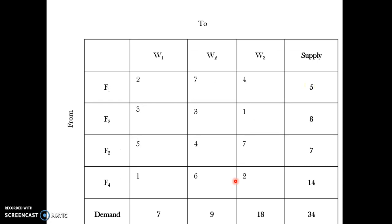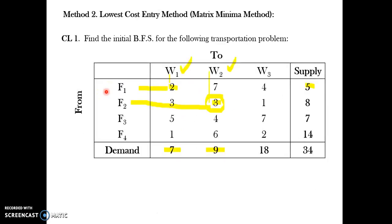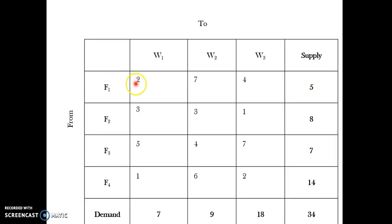Now let's go ahead with the solution. I prepare a solution table where the costs are placed in the top left corners of each cell. This solution matrix is developed in order to calculate the transportation cost. I start by looking into the least cost cell, because I want to identify where the least cost opportunity is available.